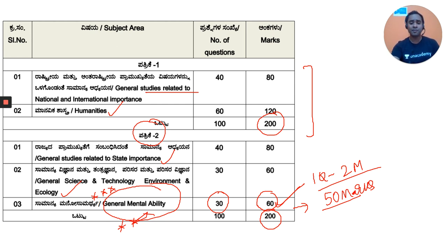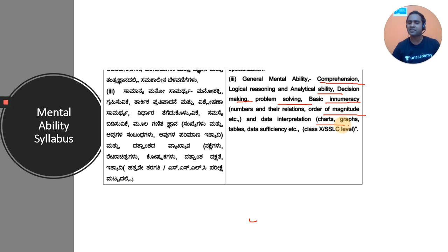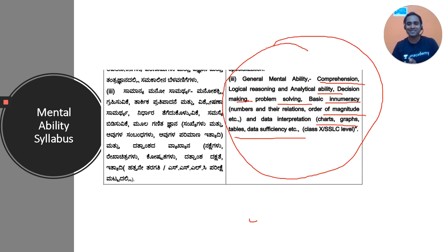The mental ability syllabus mentioned in the notification includes comprehension, logical reasoning, analytical ability, decision making, problem solving, basic enumeration, numbers and relations, order of magnitude, and data interpretation such as charts, graphs, tables, and data sufficiency. Reading this alone won't help you fully understand what to study.